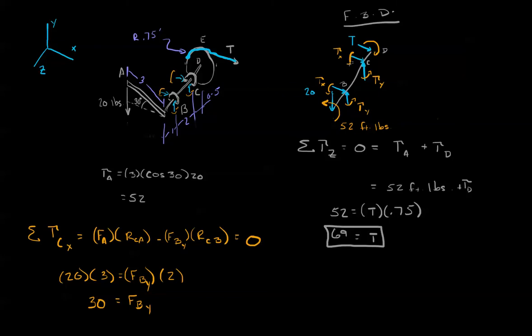And the thing that's fishy is I said the sum of the torques about C in the x direction equals zero. Well, you're thinking, wait a minute, the bearings can also apply a torque in the x direction. The bearing at B, the bearing at C, they both can do this. Yes, that's true.